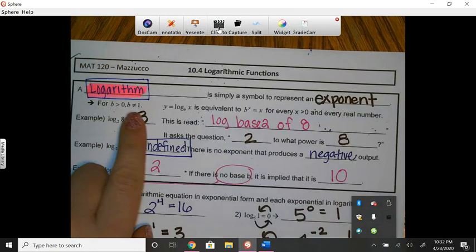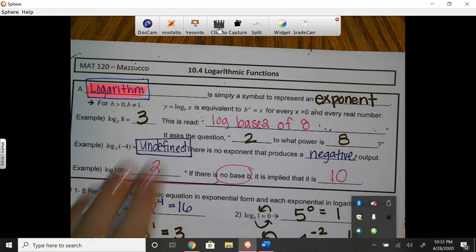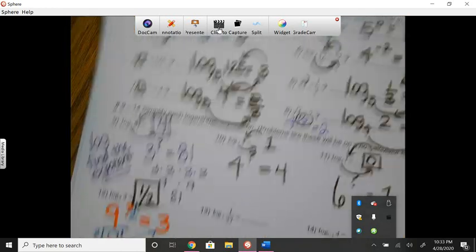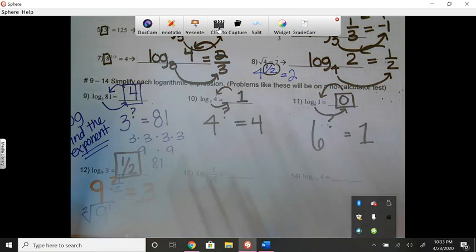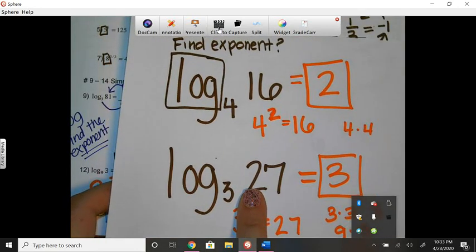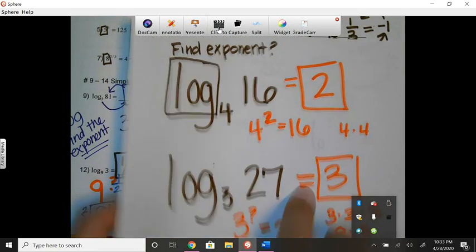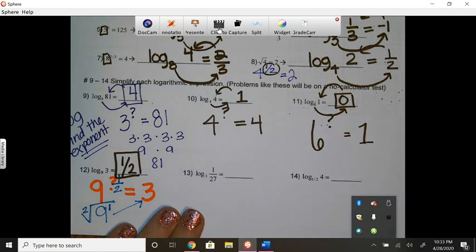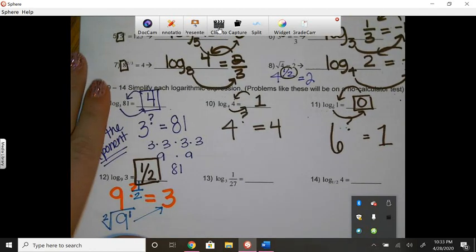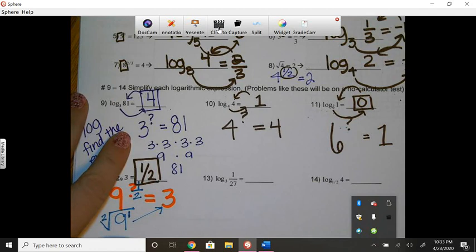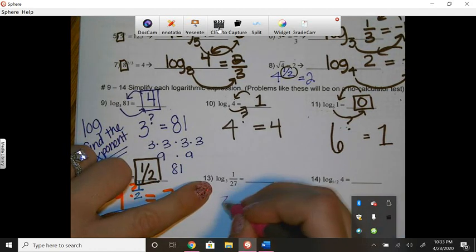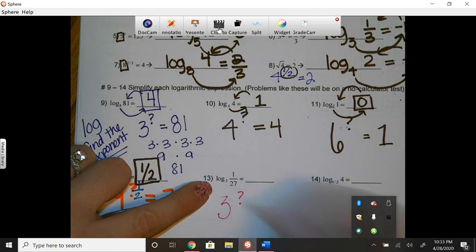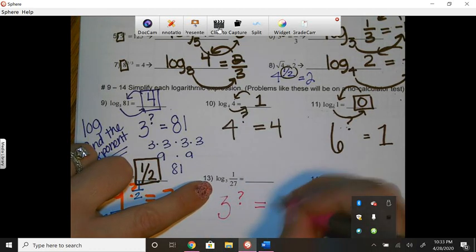Okay. So let's go ahead and go back to where we were from the last video. We left off at number 13. So again, some of these are a little bit easier, like these two problems, where the answers were positive. Sometimes we have to think about other types of exponents that are out there other than positives. So if we take a look at number 13, for instance, this is saying 3 to what power would make 1 over 27?